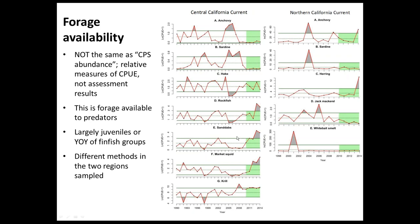The forage data tells us about feeding conditions for larger fish predators including target and protected species in different sections of the California Current. Some species in the last five to ten years have gone up strongly in parts of central and northern California Current, while others have remained fairly stable or gone down.